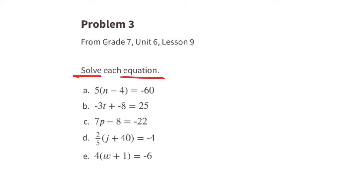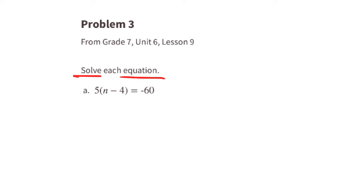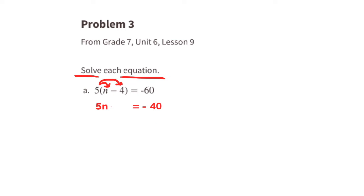Problem number 3, from 7th grade Unit 6 Lesson 9. Solve each equation. A: 5 times (n minus 4) equals negative 60. Distributing: 5 times n is 5n, and 5 times negative 4 is negative 20. So we have 5n minus 20 equals negative 60. Add 20 to both sides — negative 20 plus 20 is zero, and negative 60 plus 20 is negative 40. So 5n equals negative 40. Divide both sides by 5: n equals negative 8.